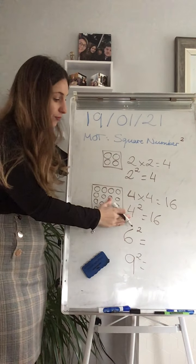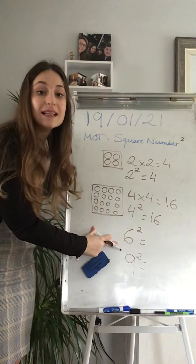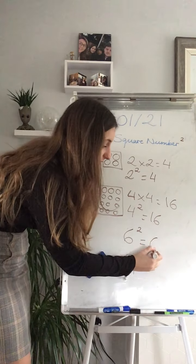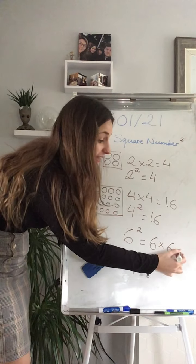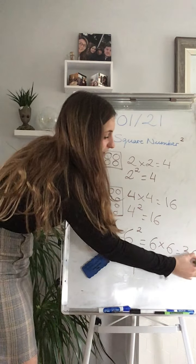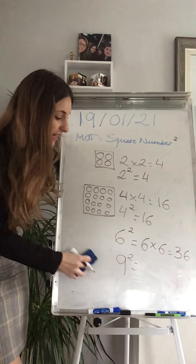4 times 4, 4 square 16. Your work was trying to find 6 square, which it will be the same as 6 times 6, which it will be the same as, absolutely right, 36.